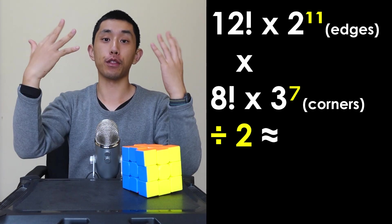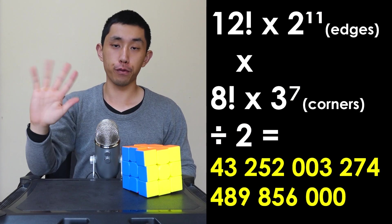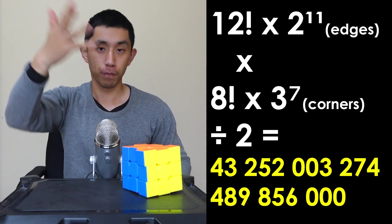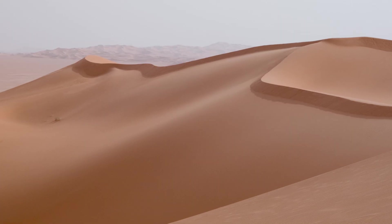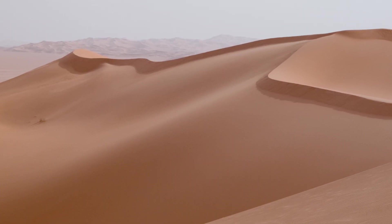Once you factor all of these in, you get the final answer of about 43 million, million, million or quintillion. This is comparable to the amount of grains of sand on Earth.